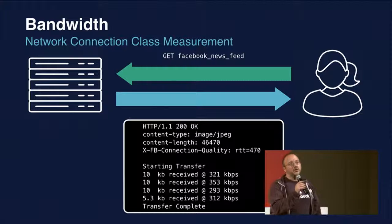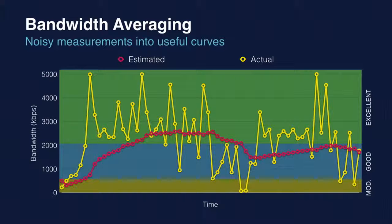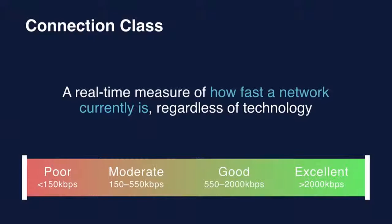We get data points all over the place. Mobile connections are notoriously unreliable — at any given time you can have a really good or really bad connection, especially if you're moving around. So we average, and we landed on geometric averaging. We break the space of all bandwidth into categories roughly 4x from each other: moderate and poor connections are the lowest, then good and excellent. We label them and find boundaries that are meaningful — so as a user moves from one connection class to another, it results in a meaningful change in performance or how they can interact with the app. We labeled them poor, moderate, good, and excellent.